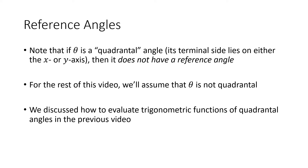A quick note: if theta happens to be a quadrantal angle — meaning the terminal side of our angle lies along one of the axes, either the x-axis or the y-axis — then this definition doesn't work. There is no reference angle because there isn't an acute angle formed between the terminal side and the x-axis. In the previous video we learned how to find trig function values for quadrantal angles, so we'll put those aside and assume theta is not a quadrantal angle.